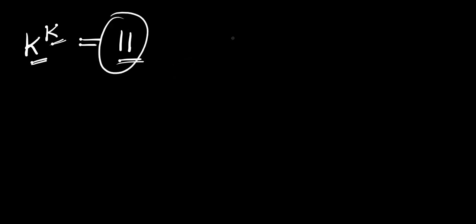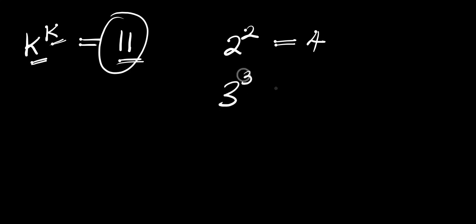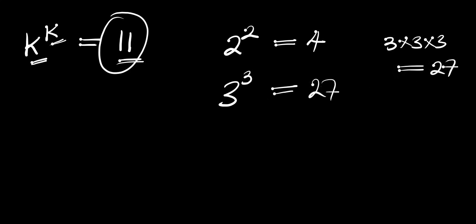Let's start this way: 2 raised to the power of 2 equals 4, but we need a number that when we raise it to the power of itself we are going to have 11. If you go over to 3, then 3 raised to the power of 3 is 3 times 3 times 3, which is 27, and this number is above 11. So 3 is out of the line.